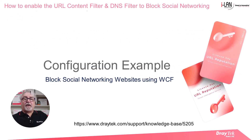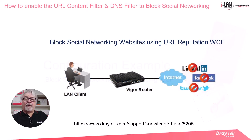Let's now look at a configuration example. We'll go through the configuration process to block social networking websites by using the URL reputation web content filter. This will involve setting up the DNS filter and the firewall filter to complete the setup. This is based on application note 5205 at the link shown here, which I'll include in the description below.